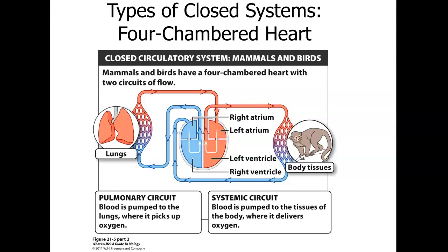Mammals and birds have a four-chambered heart with two circuits of flow — the pulmonary and systemic circuits. Starting with the body capillaries, deoxygenated blood is carried to the right atrium. From the right atrium it goes through a valve into the right ventricle — the pumping chamber — and is then pumped out through the pulmonary trunk.